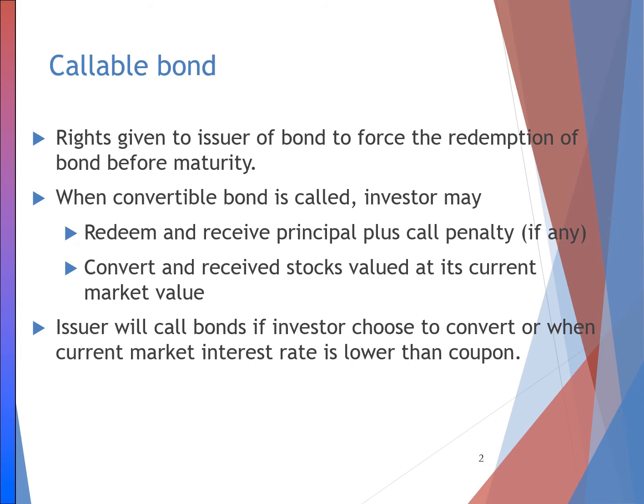So if they have the rights to call back, they will call back in a condition whereby it is not favorable for the bondholder to let the bond be called — instead, they would convert it into ordinary shares, usually when the share price is high compared to the value that the bond is being called. It could also be when the current market interest rate is lower than the coupon, meaning they can issue a new bond that is cheaper after they redeem back the bond. That is about callable convertible bond.